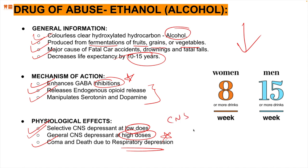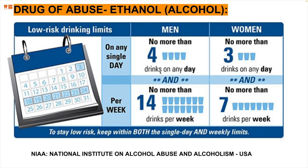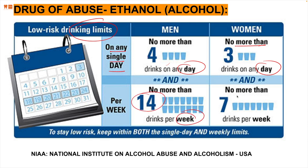Drinking limits per the National Institute on Alcohol Abuse and Alcoholism: women consuming eight or more drinks per week are considered alcoholics; for men, it's fifteen or more. Low-risk limits are no more than four drinks per day and fourteen per week for men, and three drinks per day and seven per week for women. Ethanol pharmacokinetics: primarily oral consumption; food slows absorption. Peak CNS depression occurs within 20–60 minutes. It is metabolized in the liver in two steps: alcohol dehydrogenase converts ethanol to acetaldehyde, then aldehyde dehydrogenase converts acetaldehyde to acetate. Zero-order elimination via the kidneys.